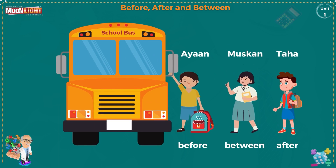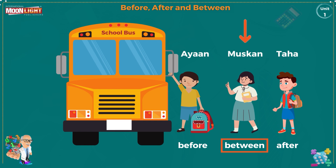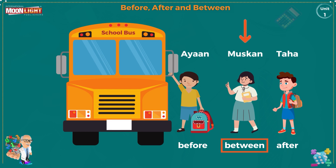For example, in this picture — you can check this picture out. In this picture, a school bus is here. Ayan is coming before Muskaan, and Taha is coming after Muskaan. But Muskaan is between Ayan and Taha. So we can find the numbers in this way.